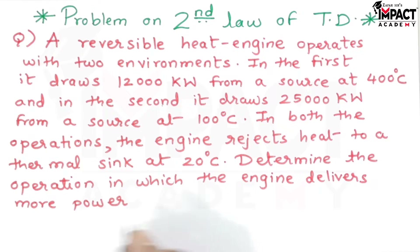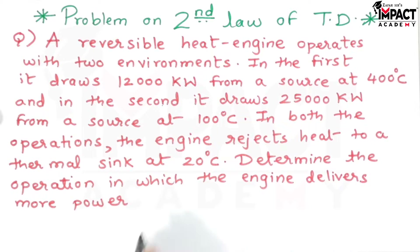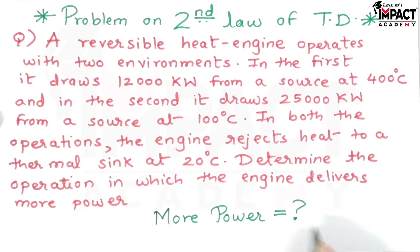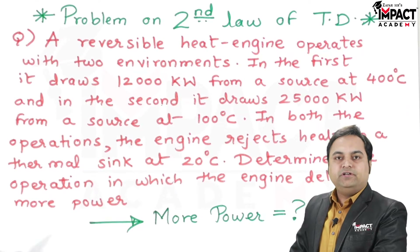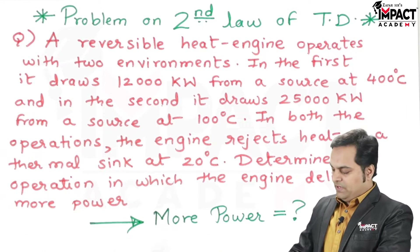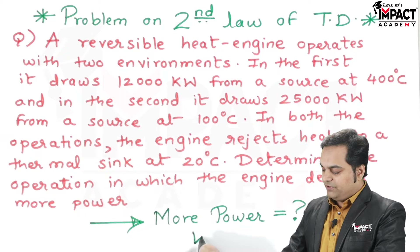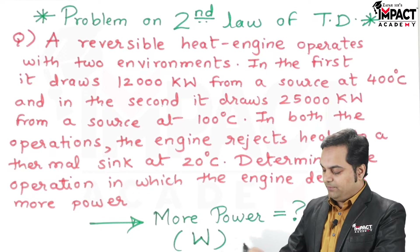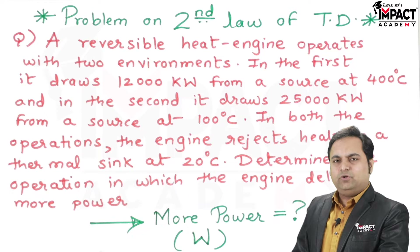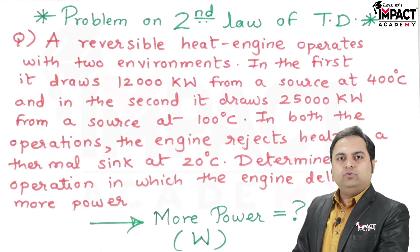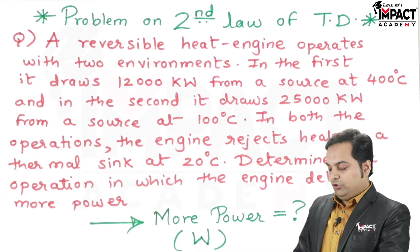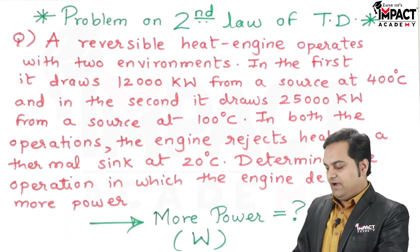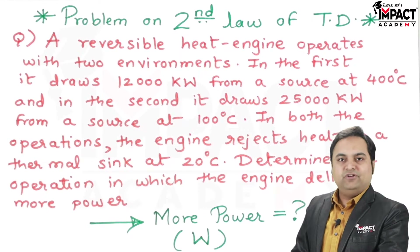The question here is: we have to find out, out of the two conditions, which engine is developing more power. When we say power, power also means the amount of work produced by the engine, which I am denoting with the letter W. So we have to calculate which engine out of the two is developing more amount of work. I will be drawing a diagram and then we'll get started with the solution part.